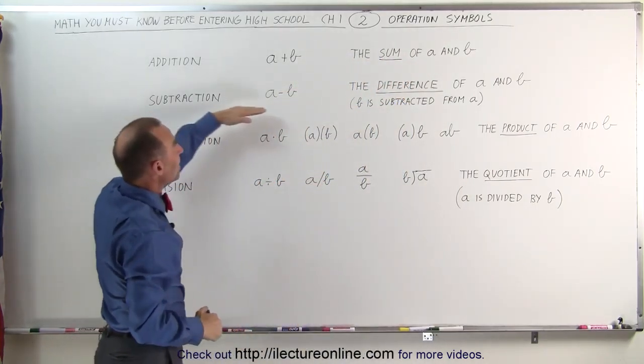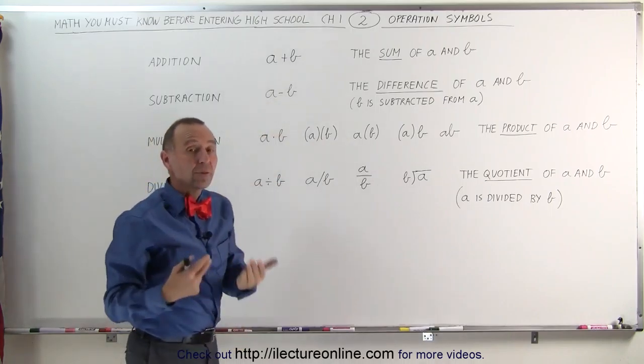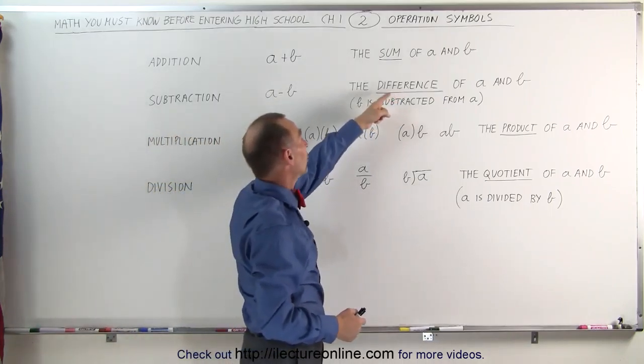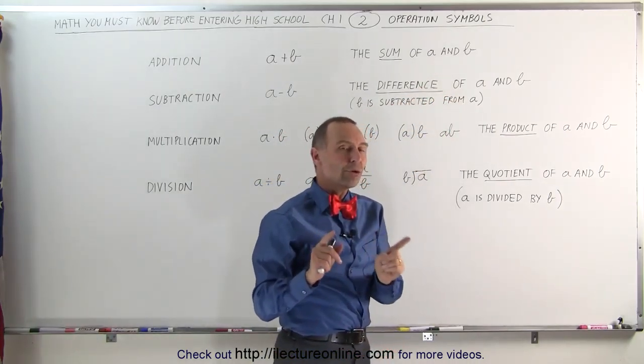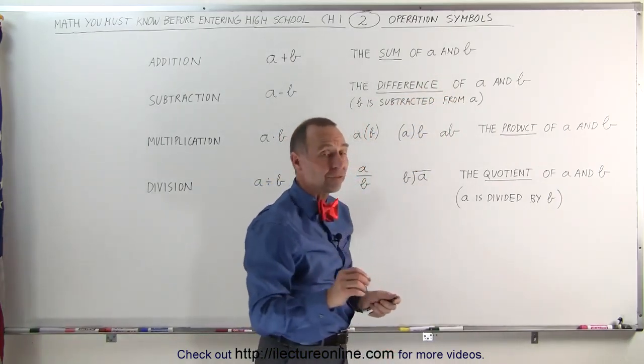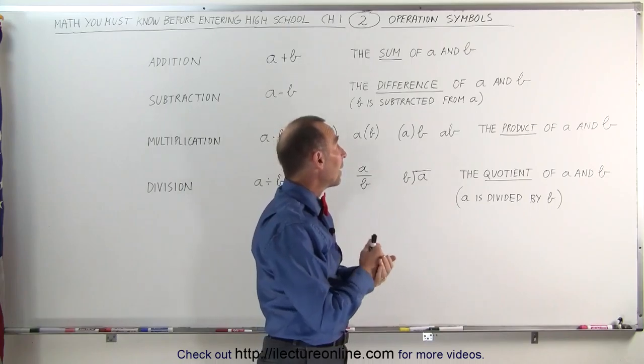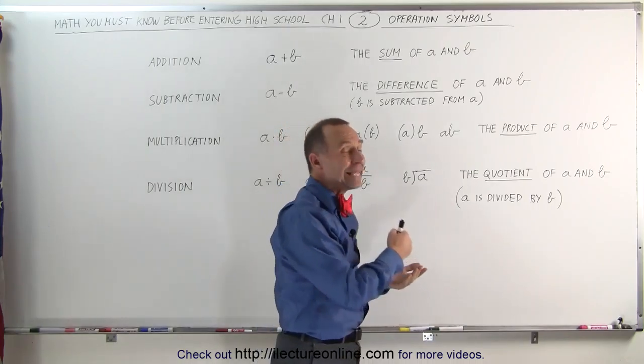With subtraction we write a minus b and the result of the subtraction is the difference, so we write the difference of a and b. The order of those two is very important and sometimes very confusing. What happens when you say the difference of b and a?